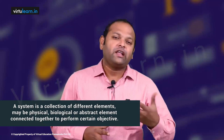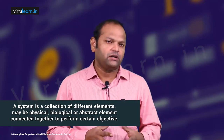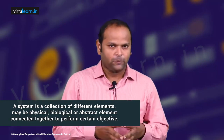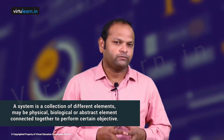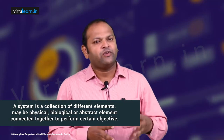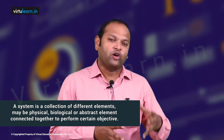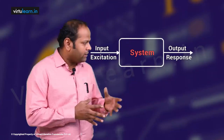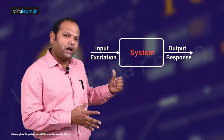Let us look at what a control system is. First of all, we will see what a system is. Simply put, a system is a collection of different elements — may be physical, biological, or abstract — connected together to perform a certain objective. A system will have an intended objective and all the components are connected together to achieve it.